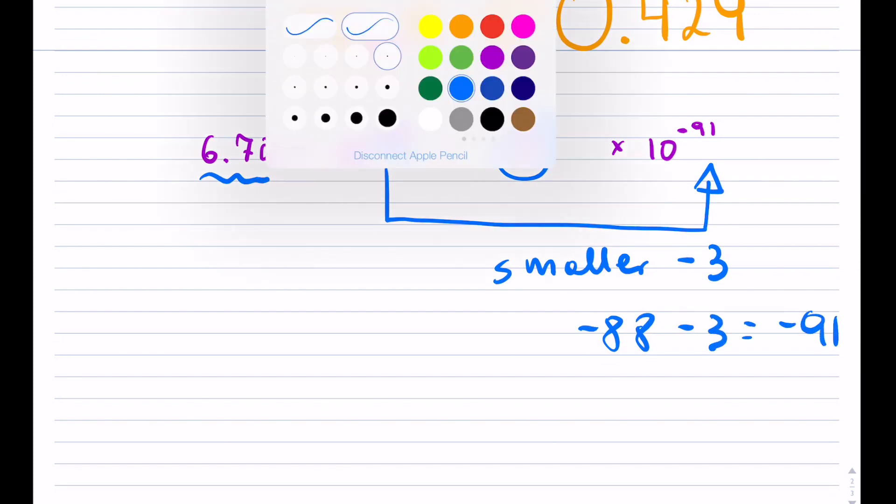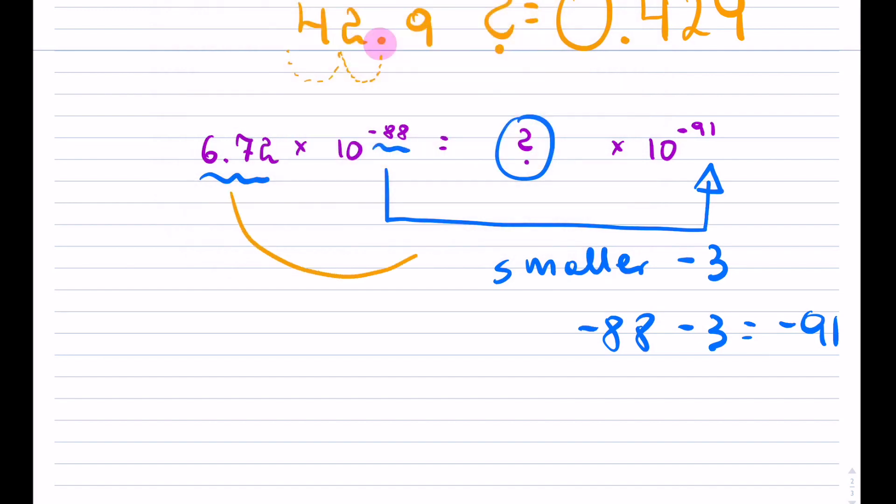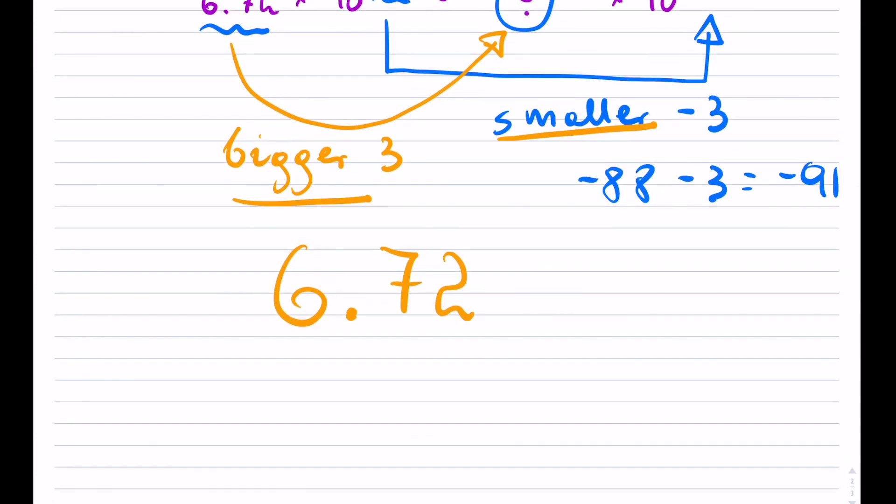And that means that our decimal will have to make the number bigger by 3. So if one gets smaller, the other one must get bigger. And moving the decimal to make it bigger. So to make the magnitude bigger, you have to shift the decimal three times where your answer for your question mark would be this.